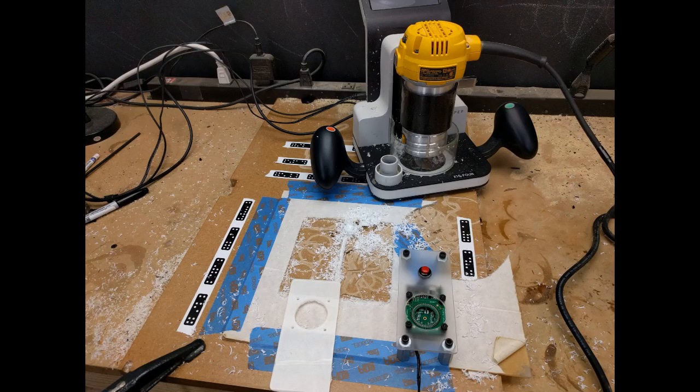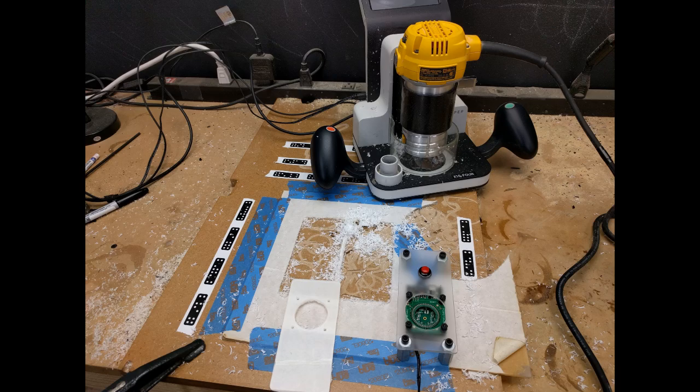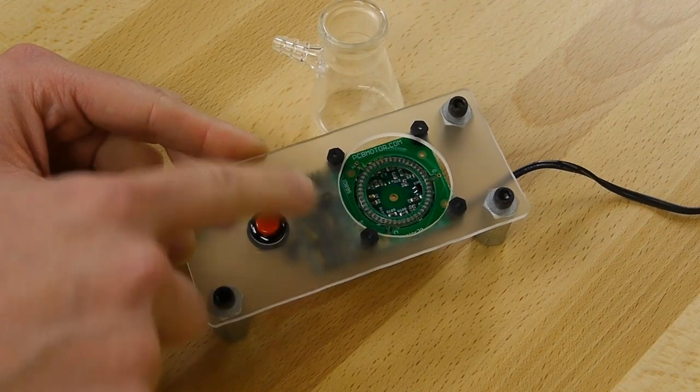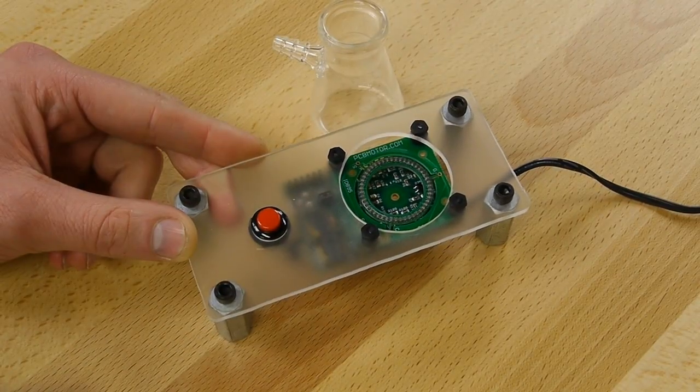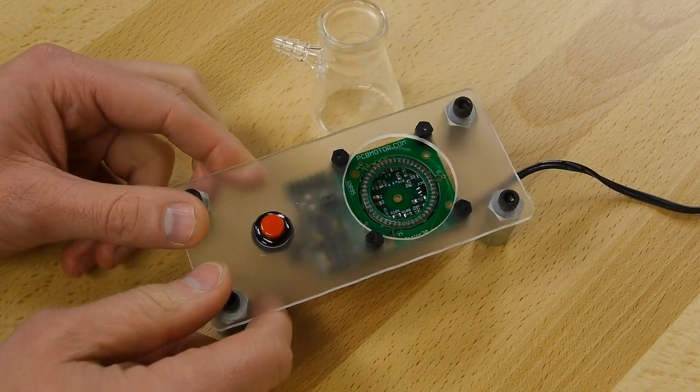Or even more interestingly, you could build a motor that's not round or straight. Like you could put this into an oval shape and have something follow a track, in an oval or any shape you want, really.